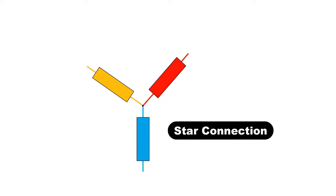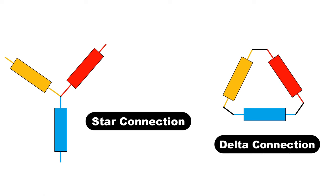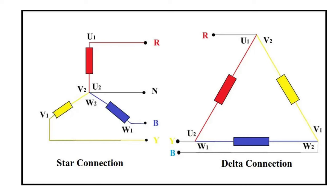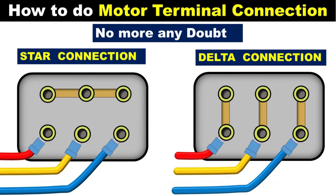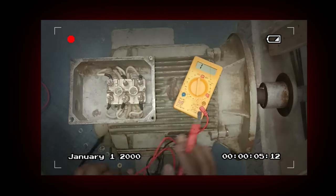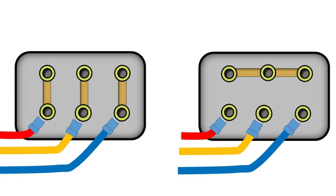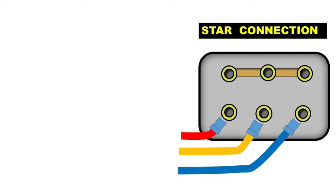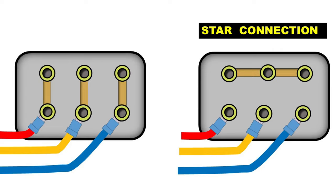By connecting motor winding directly, how you will make star connection and how you will make delta connection, I explained you. Now, for motor terminals, if connection is like this, then it will be star connection. And if connection on the motor terminals is done like this, then it will be delta connection.